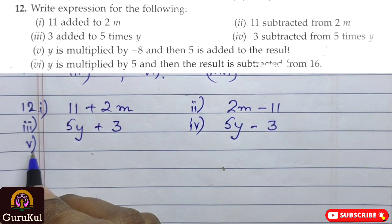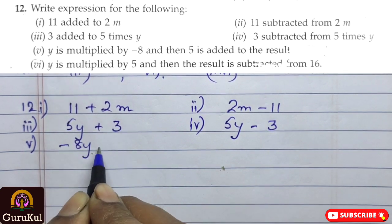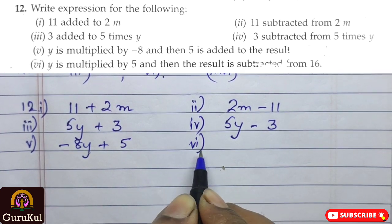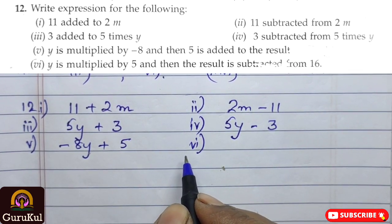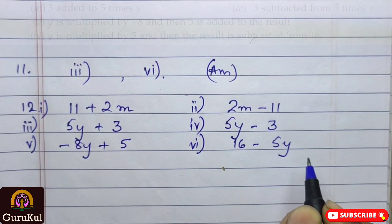Sub part 5. Y is multiplied by minus 8. That means, it becomes minus 8y. And, then, 5 is added to the result. So, minus 8y plus 5. Sub part 6. Y is multiplied by 5. That means, 5y. And, then, the result is subtracted from 16. So, 16 minus 5y.